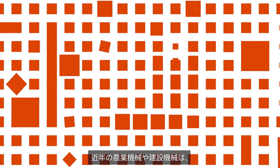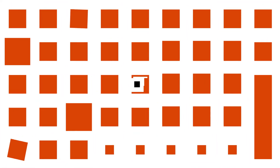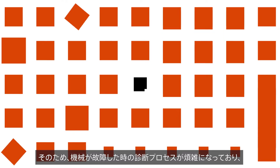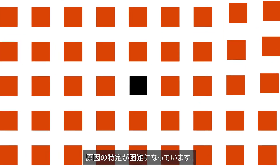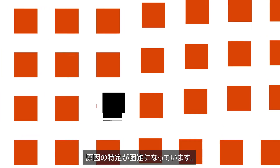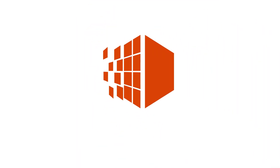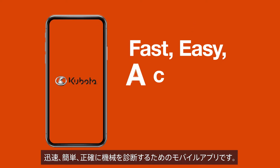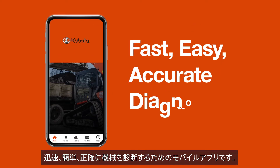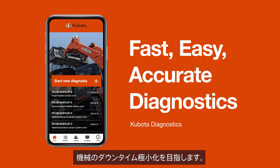Modern agriculture and construction machinery utilize a range of complex technologies including combustion engines, hydraulics and electrical systems. This complicates the process of diagnosing faulty machinery and makes it difficult to identify the cause. Introducing Kubota Diagnostics, a mobile app for fast, easy and accurate machinery diagnostics.